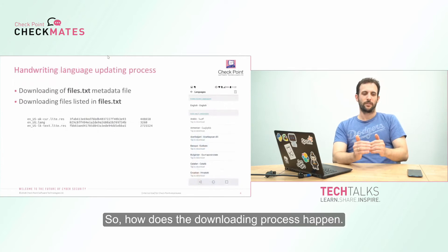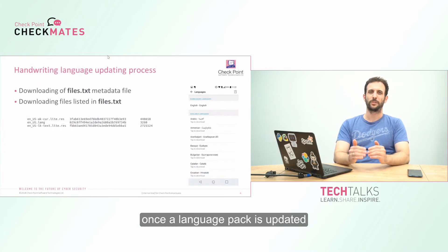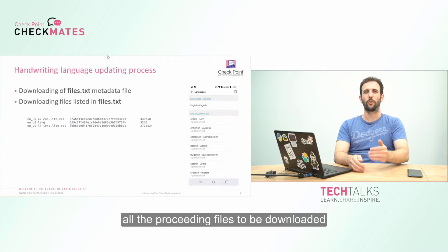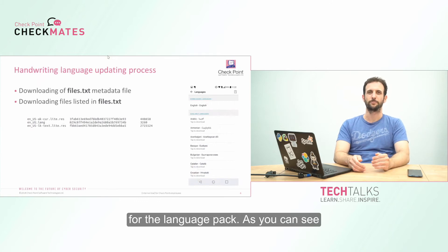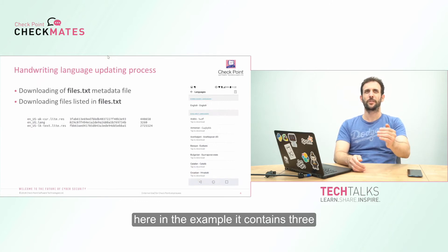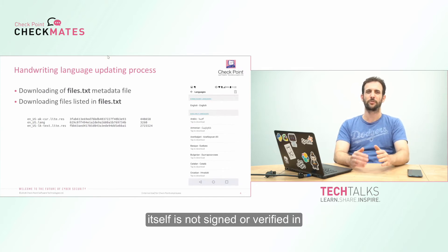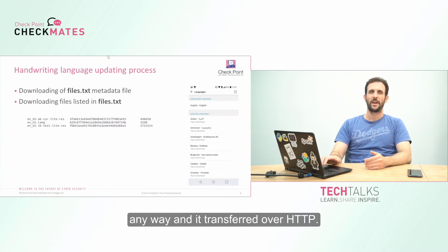How does the downloading process happen? The first file downloaded when a language pack is updated or installed is files.txt — a text file listing all the files to be downloaded for that language pack. As you can see in the example, it contains three files. While each individual file is signed, you can add or remove records from files.txt, and files.txt itself is not signed or verified in any way. It transfers over HTTP.